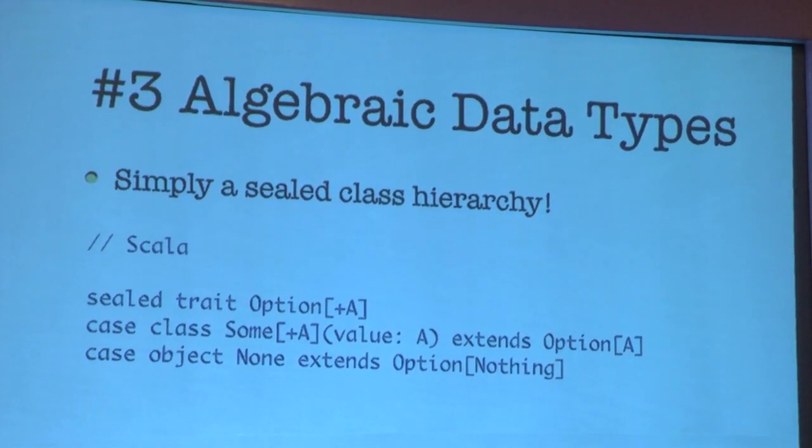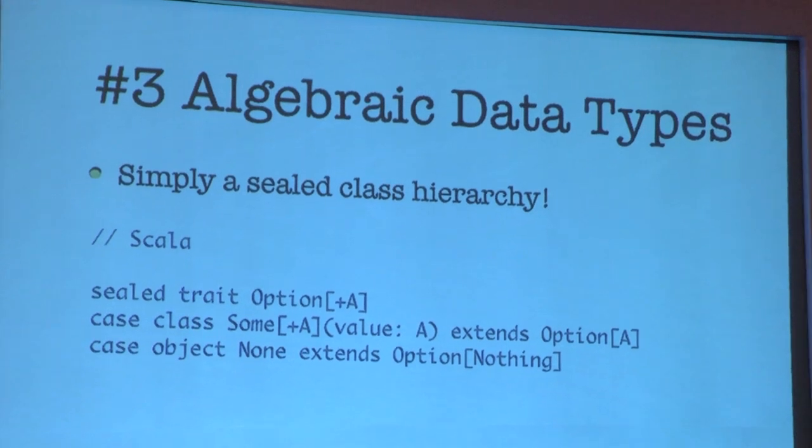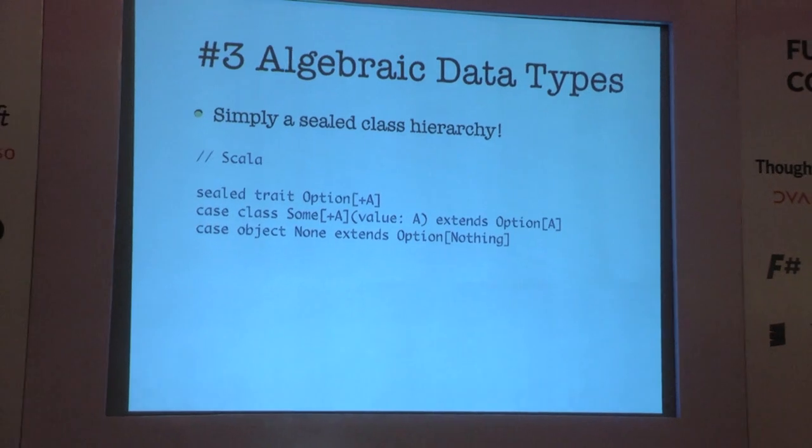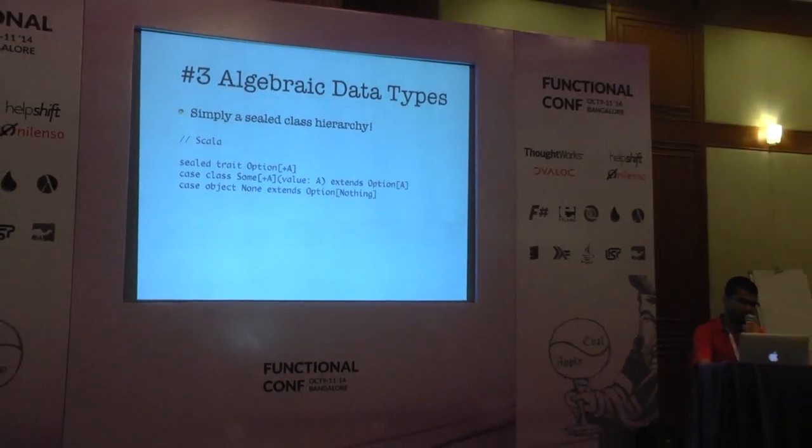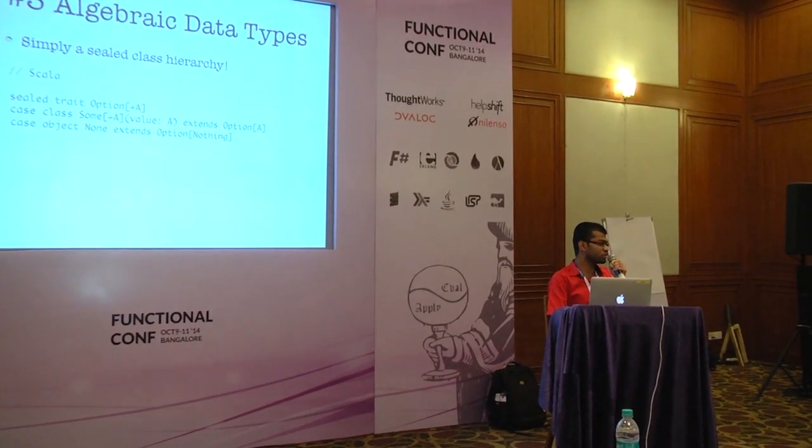Pattern matching in Scala is not magic — or rather it's magic available to you as well. When you define a case class, the compiler generates an 'unapply' method, which takes a value of that type and deconstructs it into its components. The Option wrapper indicates whether matching happened: Some means match succeeded, None means it did not. Since the contract of unapply is open to you, you are free to define your own — you do not have to use algebraic data types to benefit from pattern matching.